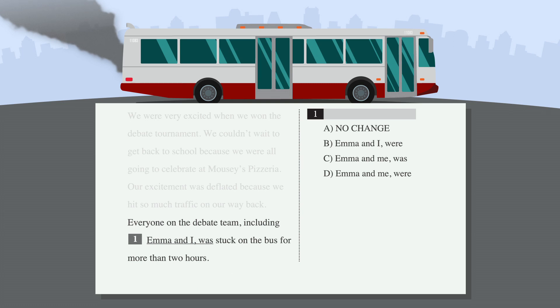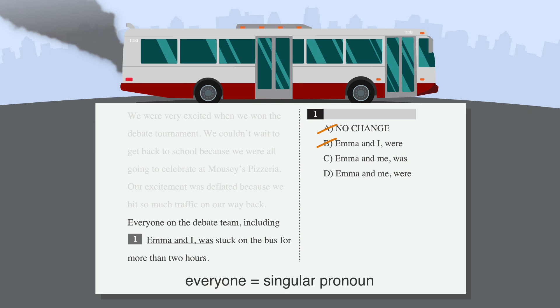Let's look at the answer choices and cross off everything that contains the pronoun I. Answer choices A and B are wrong — cross them out. We're left with answer choices C and D. What's the difference between them? Was versus were. One is singular and the other is plural. So which do we need? Let's check the subject-verb agreement. The subject of our sentence is everyone, and as we'll learn in the next lesson, everyone is a singular pronoun, so it requires a singular verb. That means answer choice C is correct.